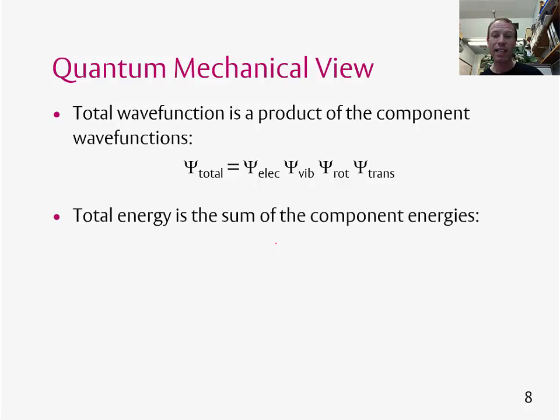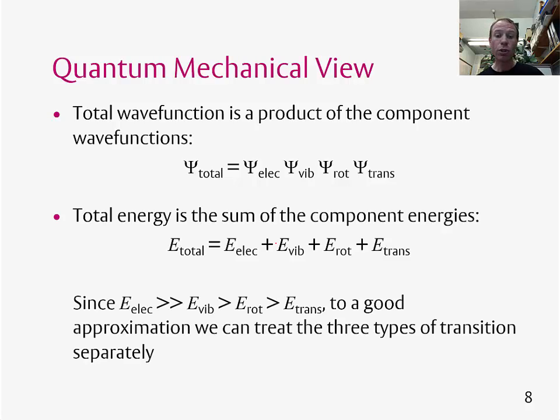The energy of the system is given by the sum of the various energies. The total energy is the sum of the electronic, vibrational, rotational, and translational energies. To a good approximation, the electronic energy is much larger than the vibrational energy, which is larger than rotational energy, which is larger than the translational energy. We can actually treat the three types of transition and the three types of energy separately, which makes things easier because we only need to think about one of them at a time.